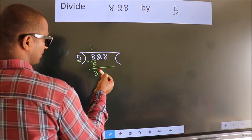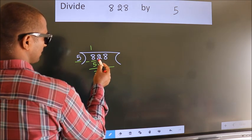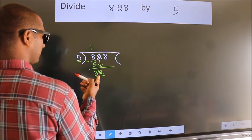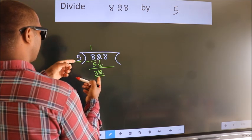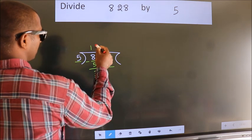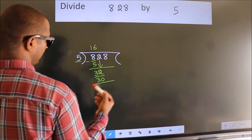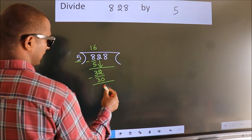After this, bring down the beside number. So, 2 down. So, 32. A number close to 32 in 5 table is 5, 6, 30. Now, we subtract. We get 2.